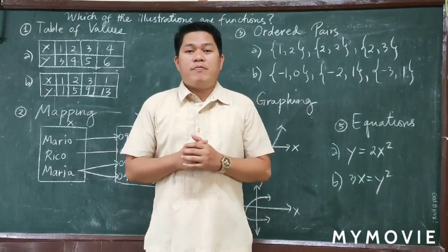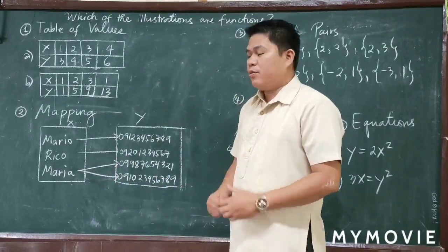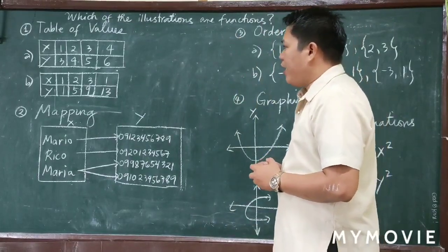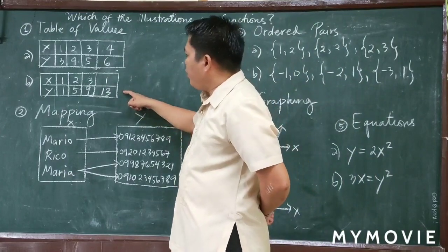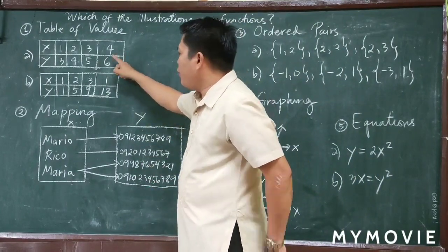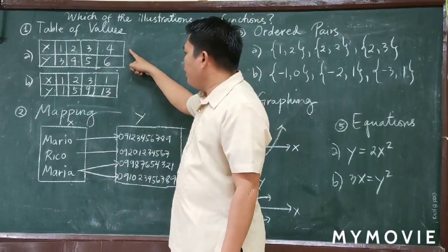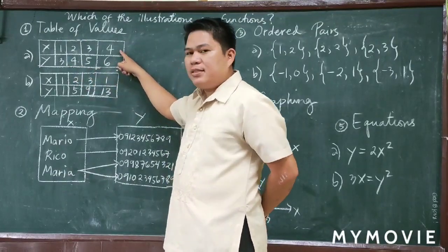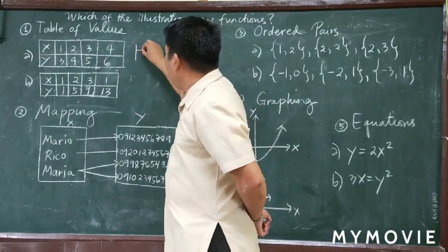Let's illustrate which of the given examples represent functions. For number one, table of values, Letter A: we have X and Y. Our domain X has values 1, 2, 3, 4 and our Y is 3, 4, 5, 6. Since no value in the domain repeats, this is a function.